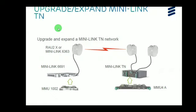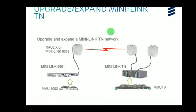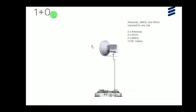For upgrading or expanding a Minilink 6691 traffic node, either a RAv2x radio or Minilink 636 radio should be used. MMU 1002 will be installed in the Minilink 6691. In an existing traffic node, MMU 4A with RAv2x radio can also be used. For a 1+0 configuration, the requirements are: 2 antennas (near and far end), 2 RAv radios, 2 MMUs, and 2 IF/RF cables. At the near end, 1 MMU, 1 IF cable, 1 radio, and 1 antenna are installed.